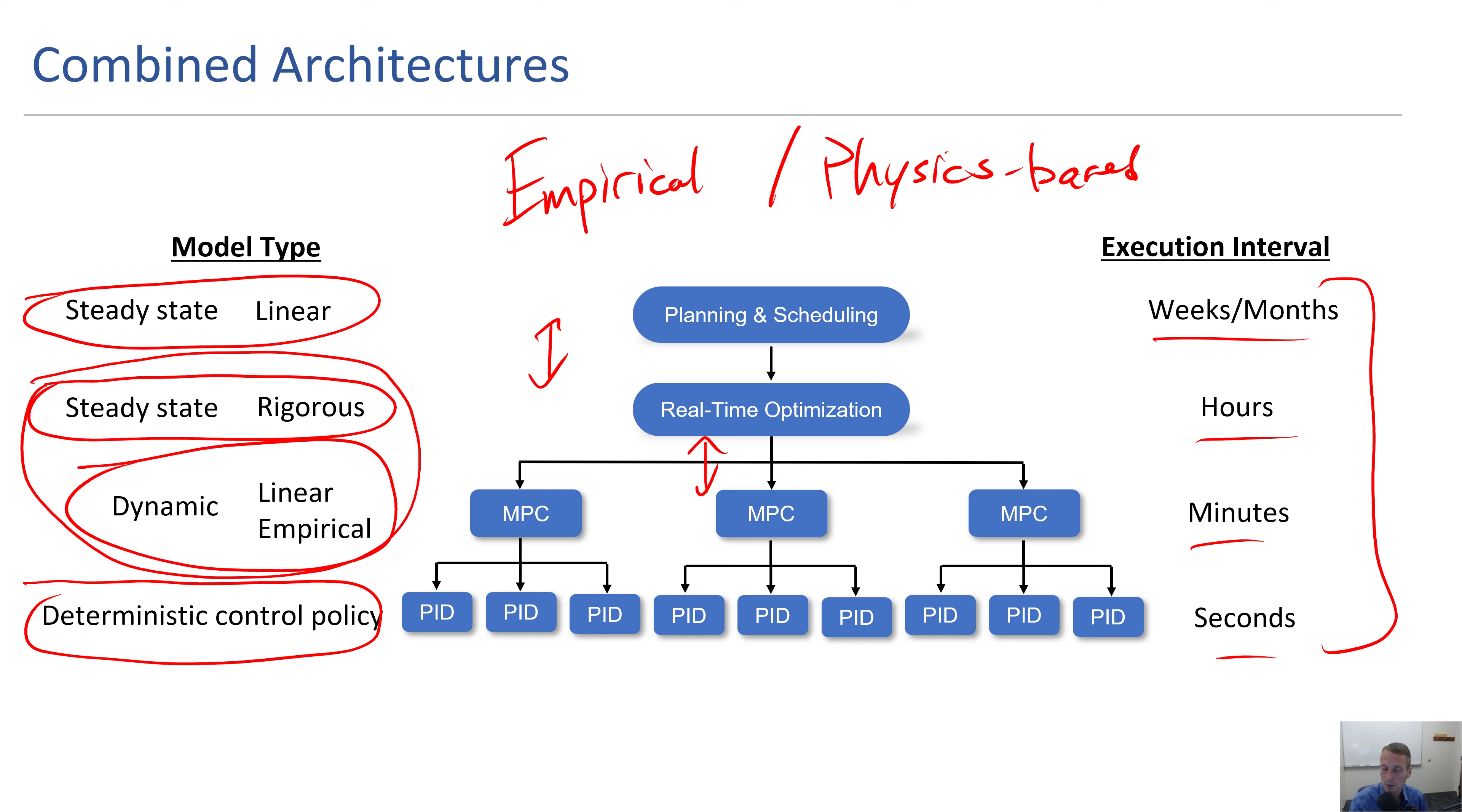You might have a rigorous steady state model based on physics, a steady state linear model based on economics, a dynamic linear empirical model, and then maybe a deterministic control policy. We typically solve this over weeks or months, hours, minutes or seconds. There's more integration happening between these layers in terms of sharing information or even combining these types of applications.